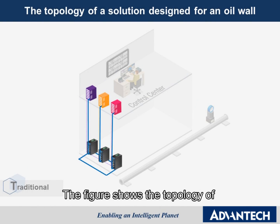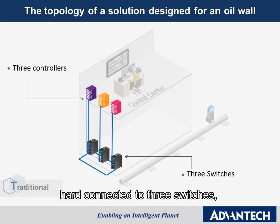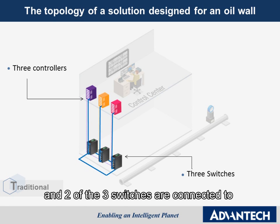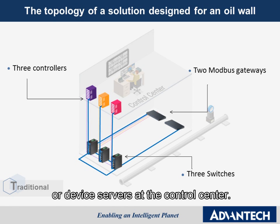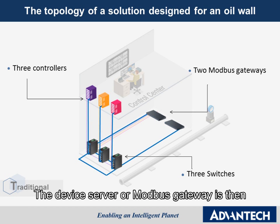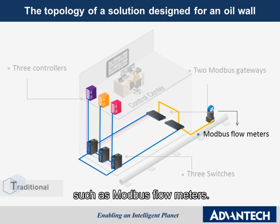The figure shows the topology of the solution designed for an oil well. There are three controllers hard connected to the three switches, and two of the three switches are connected to MOBA's gateway or device servers at the control center. The device servers on MOBA's gateway are then hard connected to end devices such as MOBA's flow meters.